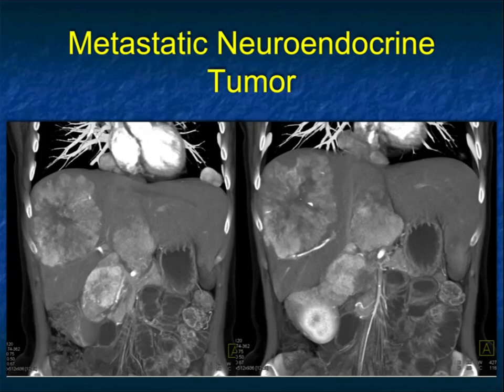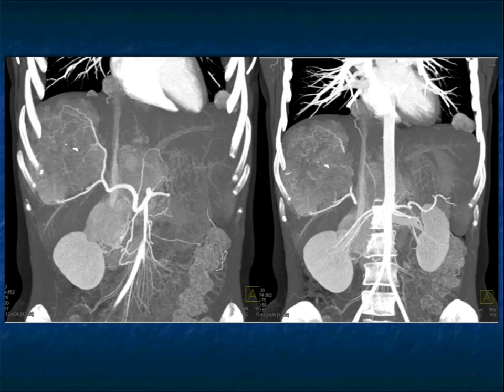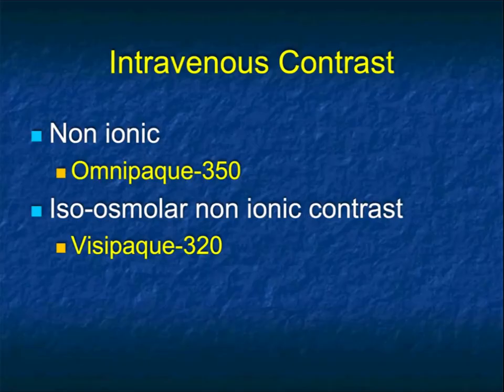We know that injection rate is critical in both diagnosing and tracking lesions. You want to scan at the same rate every study — for example, with a vascular neuroendocrine tumor, is the tumor changing because of chemotherapy or because of our injection rate? With good injection rates, you can do MIP imaging looking at neovascularity, and you can do AI.